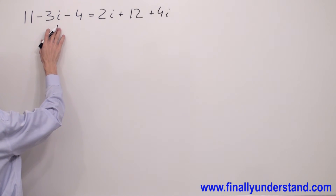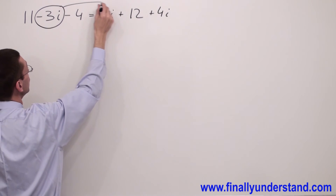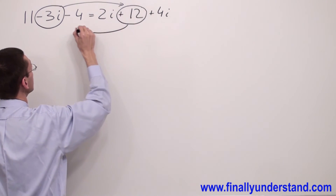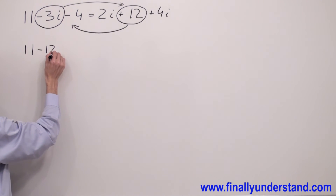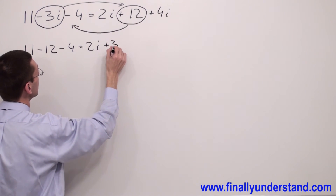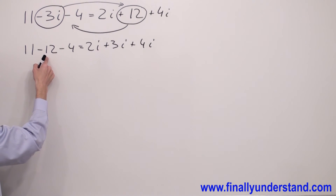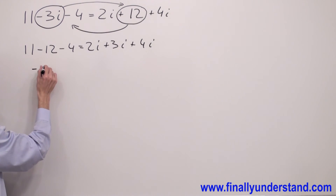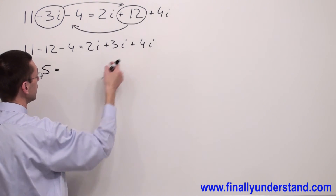I have negative 3i on the left side and two terms with i on the right side. That's why I'm going to take this term and move it to the right side. And because I have 12 on the right side, I'm going to move this 12 to the left side in order to combine like terms. So I have 11 minus 12 minus 4 equals 2i plus 3i plus 4i. That gives me negative 5 equals 9i.